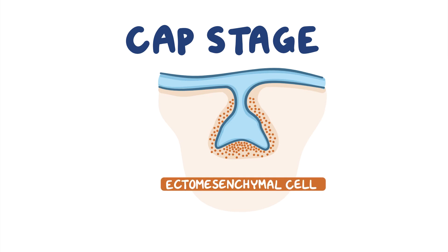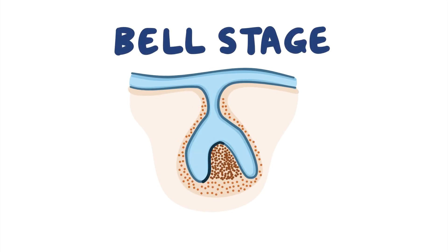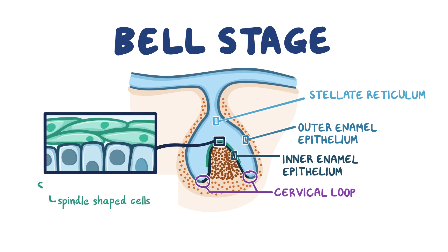The ectomesenchymal cells surrounding the enamel organ continue to accumulate, especially near the invagination of the cap. The dense condensation of ectomesenchymal cells beneath the cap is called the dental papilla, whereas the accumulation encircling both the dental papilla and the enamel organ is known as the dental sac or dental follicle. As the enamel organ continues to grow, the invagination deepens, forming the cervical loop at the tip of the invaginating epithelium where the inner and outer enamel epithelium meet. Within the enamel organ, epithelial cells between the stellate reticulum and the inner enamel epithelium differentiate into a layer of spindle-shaped cells known as stratum intermedium, and the stellate reticulum starts to collapse, reducing the distance between the inner and outer enamel epithelium.